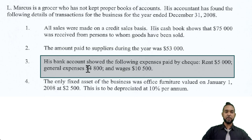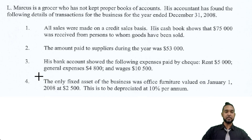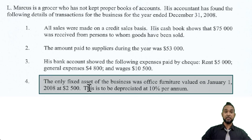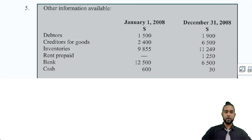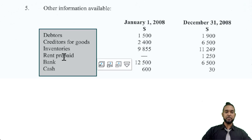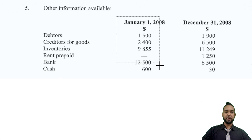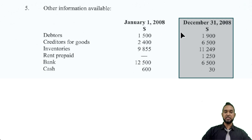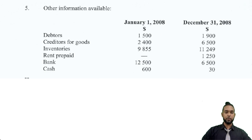His bank account showed the following expenses paid by check: rent $5,000, general expenses $4,800, and wages $10,500. The only fixed asset of the business was office furniture valued on January 1st, 2008 at $2,500, to be depreciated at 10% per annum. We also have opening and closing balances for debtors, creditors for goods, inventories, rent prepaid, bank, and cash — opening balances under Jan 1st 2008 and closing balances under December 31st 2008.